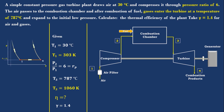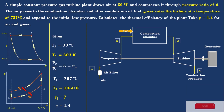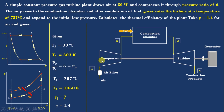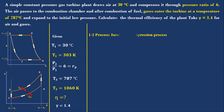Now draw the PV diagram and TH diagram. We know that a simple gas turbine plant consists of 4 processes: process 1-2 is isentropic compression in the compressor; 2-3 is constant pressure heat addition in the combustion chamber; 3-4 is isentropic expansion in the turbine; and 4-1 is constant pressure heat rejection due to the atmosphere.